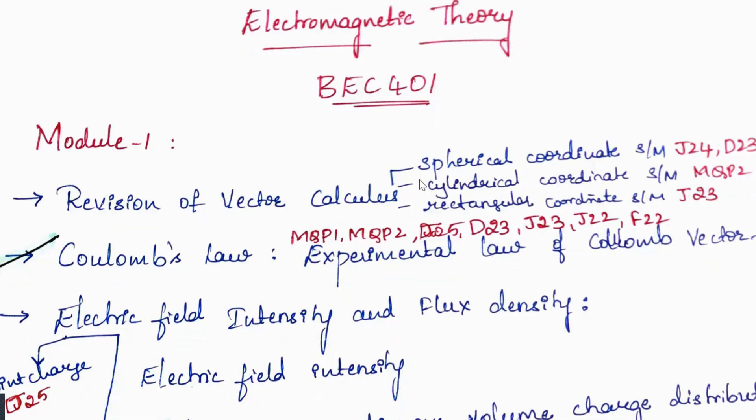Hello everyone, welcome to the Exam Ignite YouTube channel. From today I am starting a new series of Electromagnetic Theory subject videos, where you will be getting module-wise videos with easy-to-understand derivations. The subject code is BEC401, fourth semester, 2022 scheme. Today we'll start with Module One. In this module I'm doing two parts of videos.